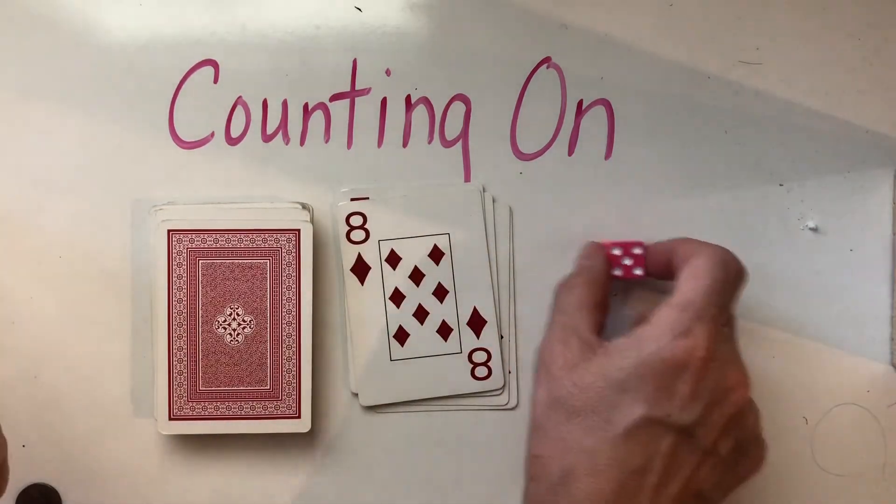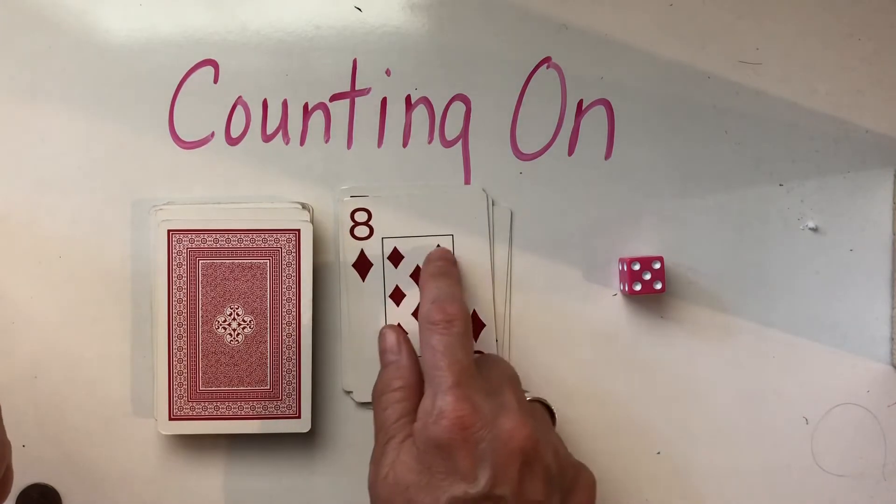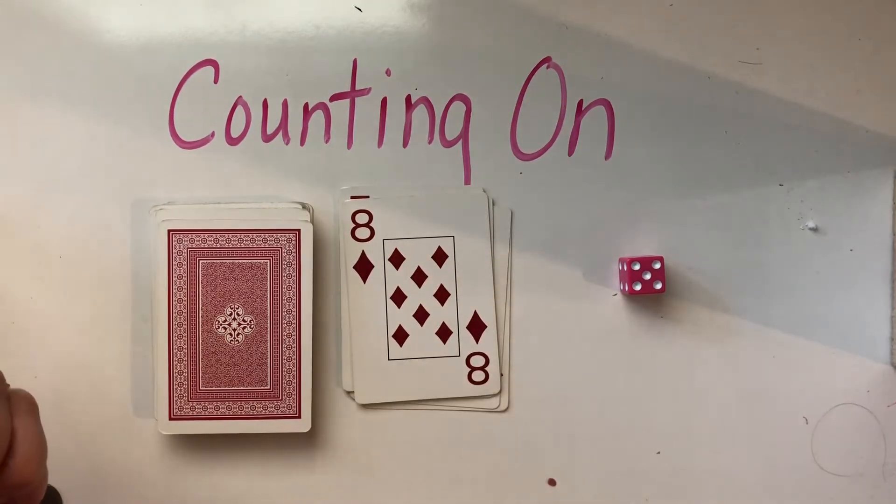Let's count on from five. Oh, let's see if we can do this one. Five, six, seven, eight, nine, 10, 11, 12, 13. We did it. Good job.